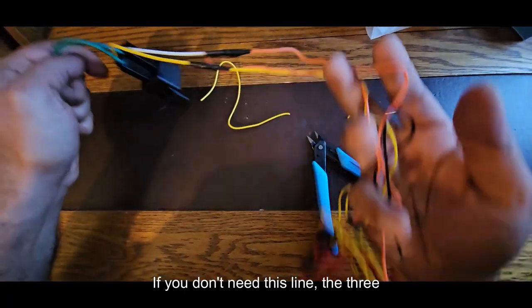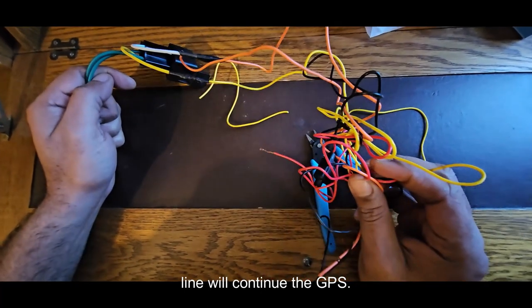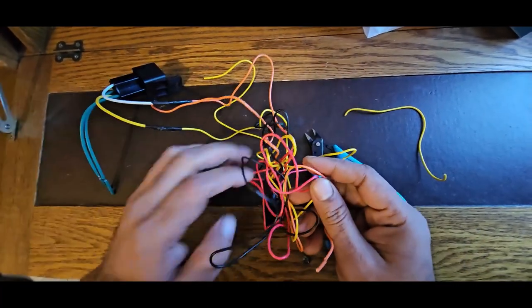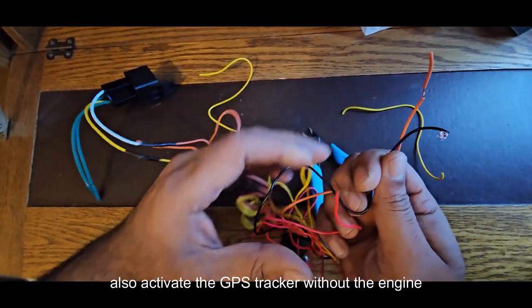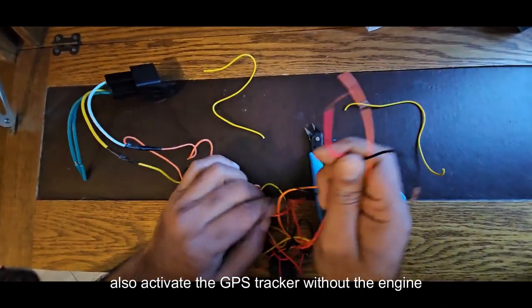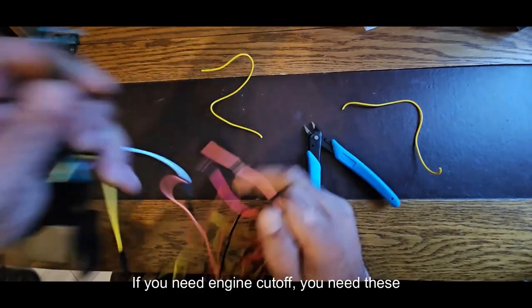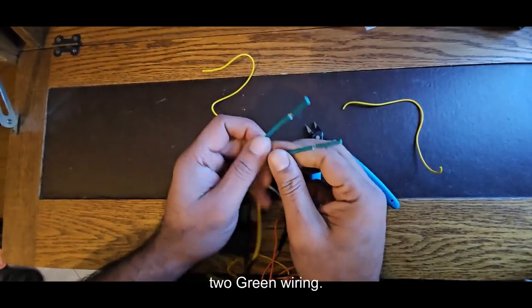If you don't need this line, the three lines will continue the GPS: the red, black, and orange. These three lines also activate the GPS tracker without the engine cutoff. If you need engine cutoff, you need these two green wires.